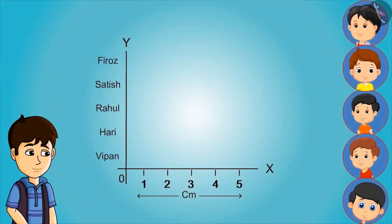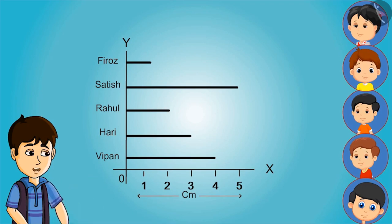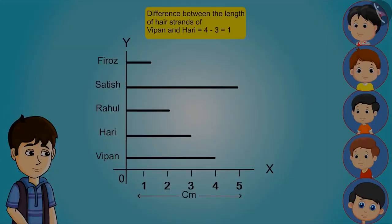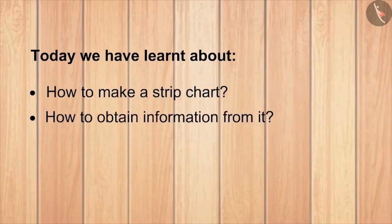What are you making for so long? I have made a big chart for you. What will we do with this? Now all of you have to measure a strand of your hair and tell me the length. Vipin, tell me what is the length of your hair strand? Four centimetres. And yours, Hari? Three centimetres. So who has the lengthiest hair? Mine. How long is your hair compared to Hari's? One centimetre longer. Vipin, go get a nice haircut! Today we have learnt about how to make a strip chart and how to obtain information from it.